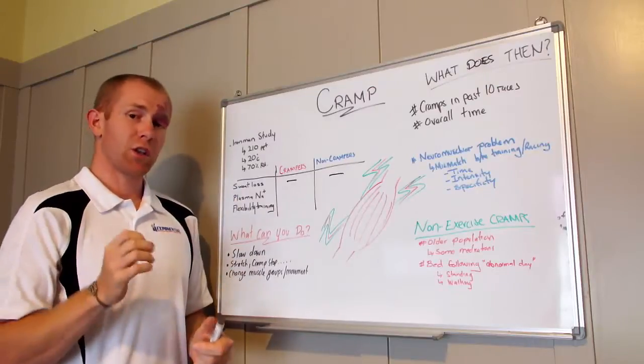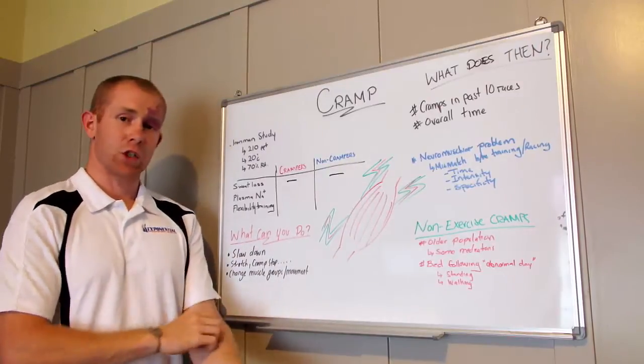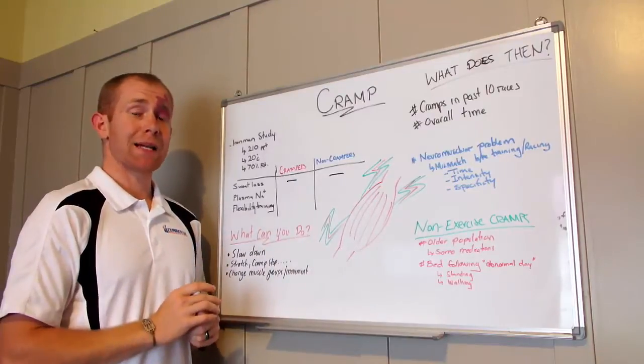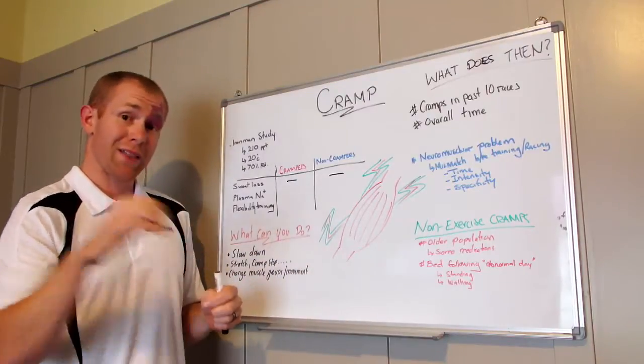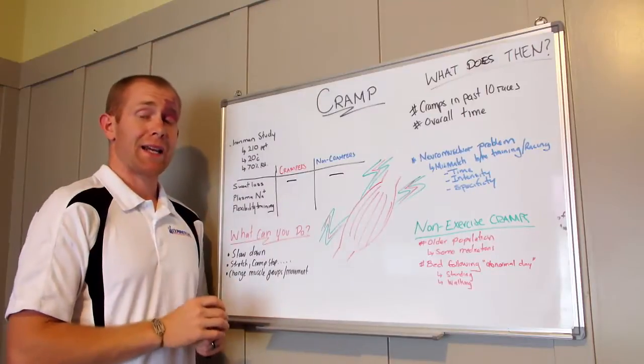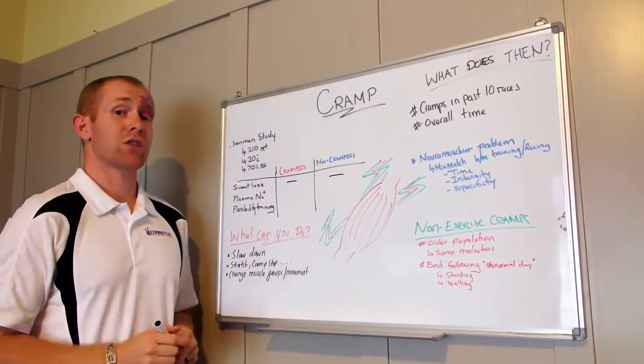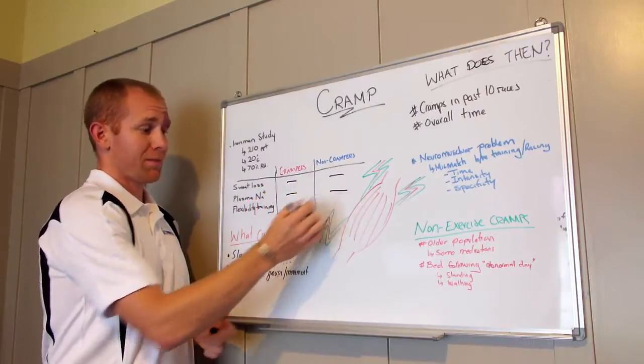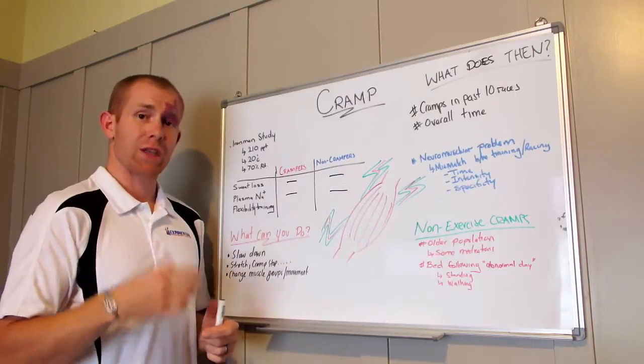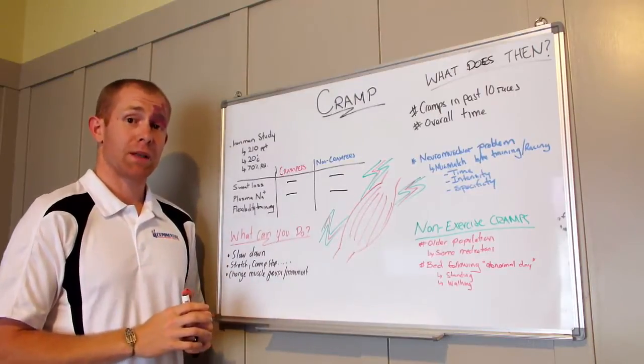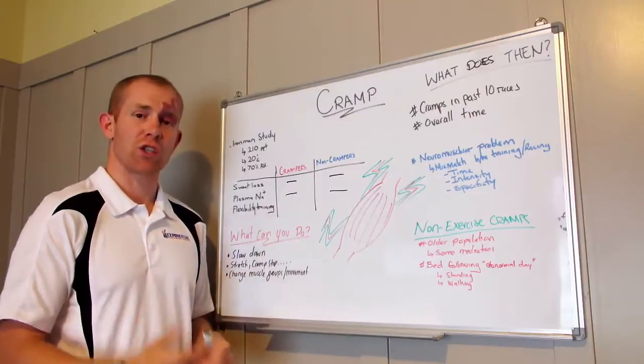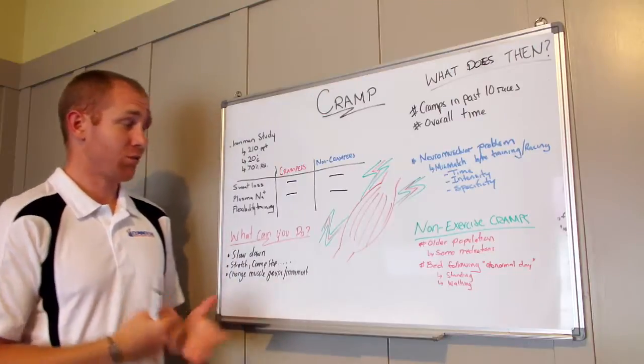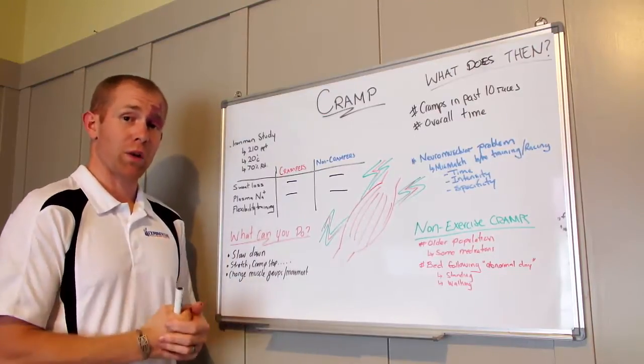Plasma sodium, looking at one of the key electrolytes in the body. They took a blood sample before the race, looked at how much sodium or salt is in the blood, then took another sample after the race. The really interesting thing was that whether you cramped or didn't cramp, there was no difference in the change in plasma sodium. So it didn't matter how much electrolytes you lost, that didn't affect if you cramped or not.